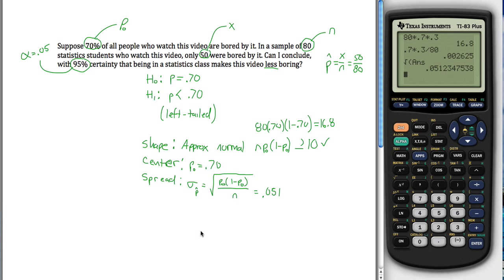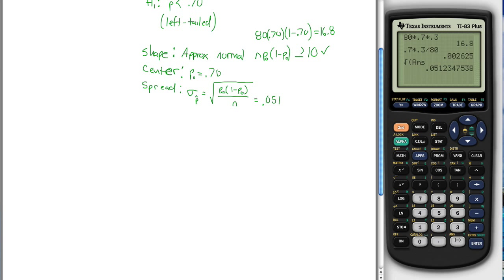So I have the shape, the center, and the spread, so now I can draw pictures and make my conclusion. Turns out that I'm going to draw different pictures depending on which method of testing I'm using. I'm using the classical method, I'm going to draw a picture over here, and if I'm using the p-value method, I'll draw a picture over here. Either way, I want something that's approximately normal. There's a couple distributions that are supposed to be approximately normal. Either way, I want the center to be 0.70.